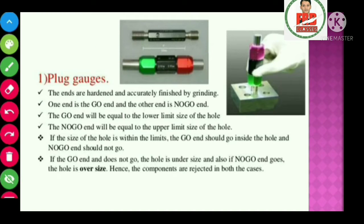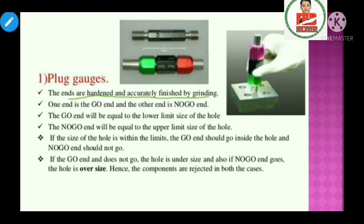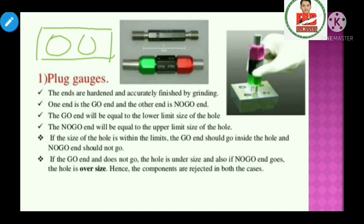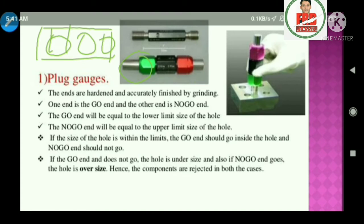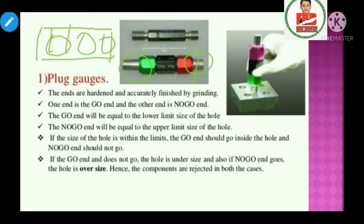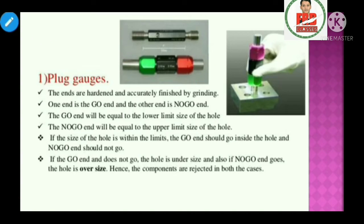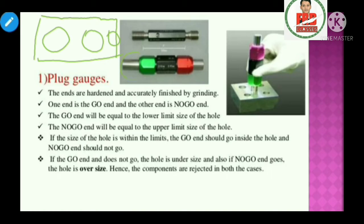The ends are hard and accurately finished by grinding. The end is a cylinder. This cylinder has a green side which should go smoothly — then it will be okay. The red side should not go. This is the green side go end and no-go end.